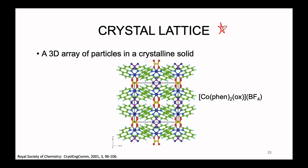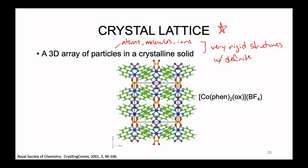A crystal lattice, by technical definition, is just a 3D array of particles. These could be atoms, molecules, or ions, all depending on what materials are going into your structure. What they all have in common is that they form very rigid structures with definite shapes and volumes. The shapes and volumes we can trace back ultimately to the chemical composition — shape depends on what materials are present, and volume depends on how much of that material you have.